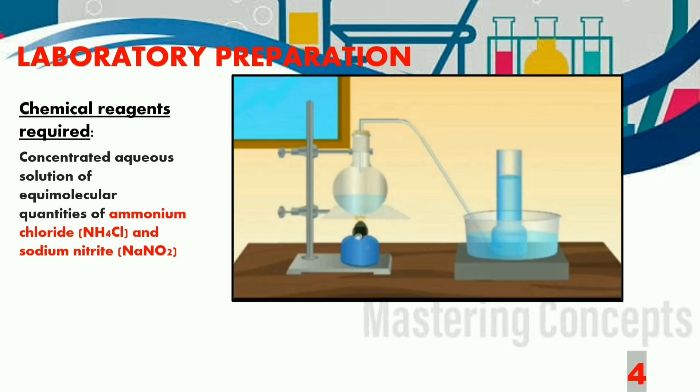Next up we have the most important portion of this chapter which is the laboratory preparation of nitrogen gas. The chemicals required for the preparation of nitrogen gas are ammonium chloride which is NH4Cl and sodium nitrite NaNO2. These two compounds should be in a concentrated aqueous solution and in equimolecular quantities.